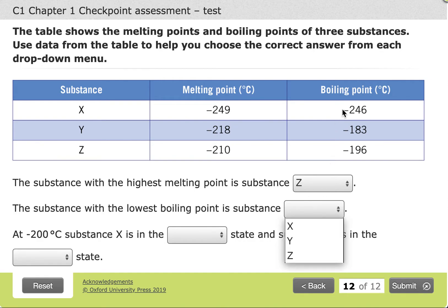Similarly, with the same logic, substance X has the lowest boiling point because its boiling point is furthest from zero. It is the most negative.